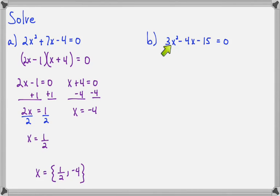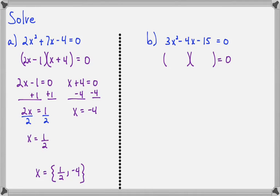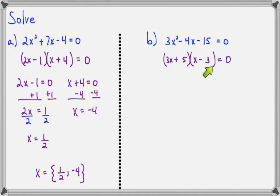For the equation 3x squared minus 4x minus 15 equals 0, I do have 0 here, so I can start factoring. This is a trinomial, so it factors into two binomials. First times first is 3x times 1x. The signs need to be different. Last times last has to be 15, which makes us think of 3 times 5, but because of the 3 already in the first term, I can't put a 3 here. So I'll put 5 on the left side and 3 on the right. Outer times outer is negative 9x, inner times inner is positive 5x, and negative 9x plus 5x is negative 4x.